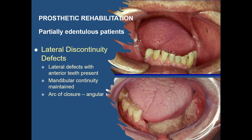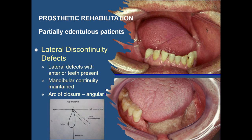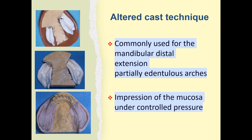The arc of closure of the mandible is quite different from non-surgical patients. When viewed from a frontal plane, the closure is angular rather than vertical, producing forces of occlusion that are entirely unilateral and confined exclusively to the non-resected side. This causes the resected side to drop down out of occlusion as the force of contraction on the unresected side increases, and the location of the fulcrum line is also difficult to determine. In such situations, the altered cast impression technique is most commonly used for mandibular distal extension partially edentulous arches.